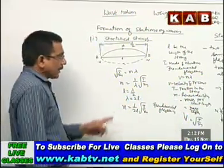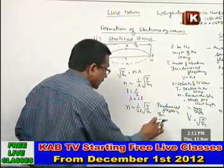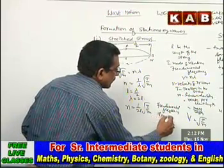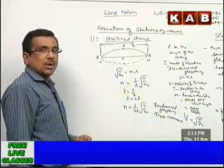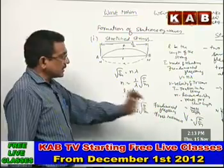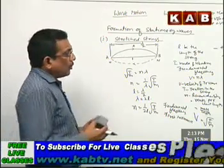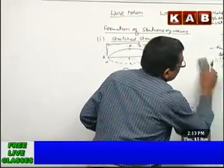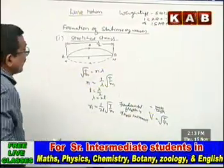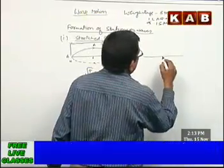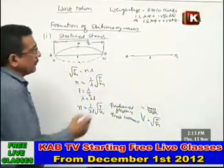This frequency is called the fundamental frequency, also called the first harmonic, because frequencies are also called harmonics. The minimum frequency is called the first harmonic. In the same string, you can also get different higher frequencies. If you take the same length of string and vibrate it with more external periodic force, you get higher modes.